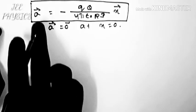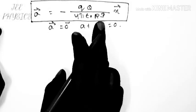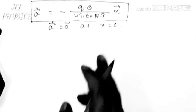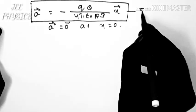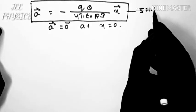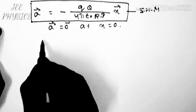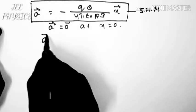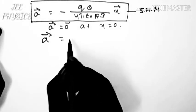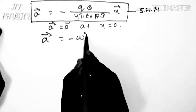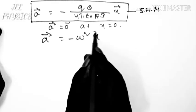Therefore this is the condition for a particle to execute simple harmonic motion. The particle will execute simple harmonic motion and we can write a equal to minus omega square x.